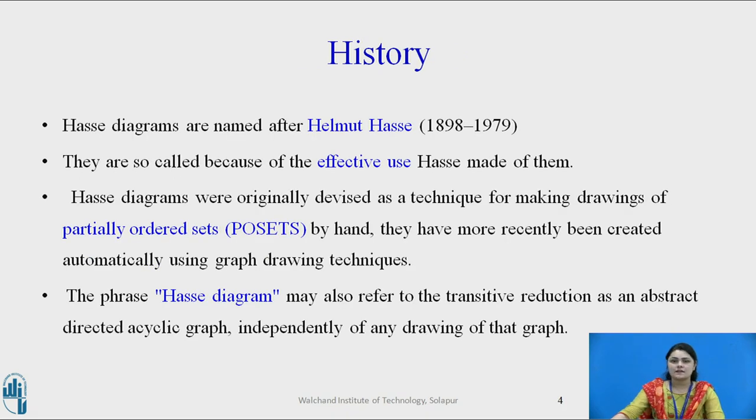Now let us see history. Hasse diagrams are named after Helmut Hasse. They are called Hasse diagram because of the effective use Hasse made for them. Hasse diagrams were originally devised as a technique for making drawings of partially ordered sets, that is POSET, by hand and they have more recently been created automatically using graph drawing techniques. Now the phrase Hasse diagram may also refer to the transitive reduction as an abstract directed acyclic graph independently of any drawing of that graph.